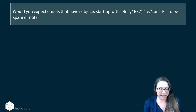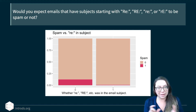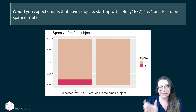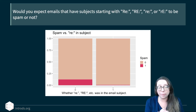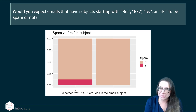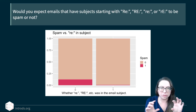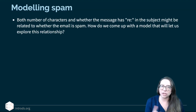Let's also look at another variable: 're' in the subject. Because both variables are categorical, we can use a stacked bar plot. Each column represents whether 're' was in the email subject or not. For the zero column — where 're' is not in the subject — a higher proportion (shown in dark pink) are spam emails, which is what we'd expect. But some emails that had 're' in the subject were actually spam — those are probably not real replies but spam emails that placed that string of characters in the subject.